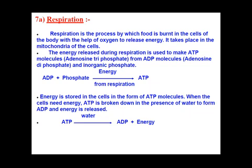The energy obtained through respiration is used to make ATP molecules — adenosine triphosphate. ATP is formed from ADP molecules (adenosine diphosphate): one molecule of inorganic phosphate combines with ADP, utilizing energy from respiration, leading to the formation of adenosine triphosphate. As you may recall from ninth class science, ATP was known as the energy currency of the cell.